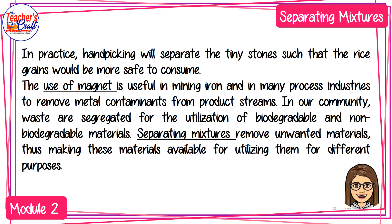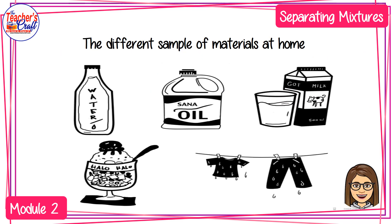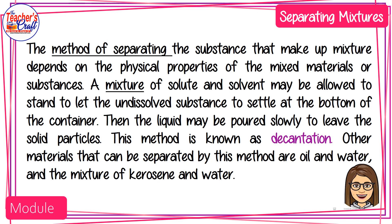Separating mixtures removes unwanted materials, making them available for different purposes. Examples of materials found at home include water, oil, milk, halo-halo, and drying clothes. The method of separating substances depends on their physical properties. A mixture may be allowed to stand so the undissolved substance settles at the bottom; the liquid is then poured off slowly — this is known as decantation. Other materials separated by this method include oil and water, and kerosene and water.